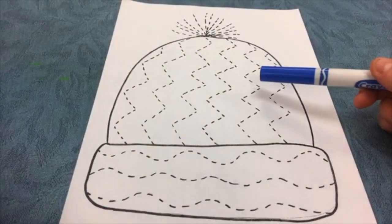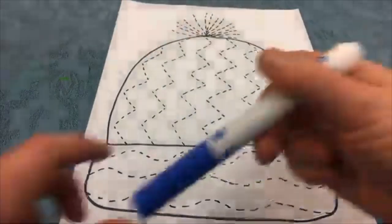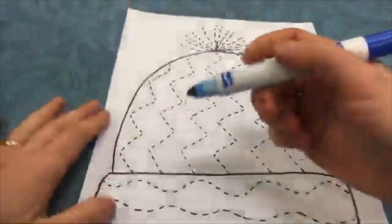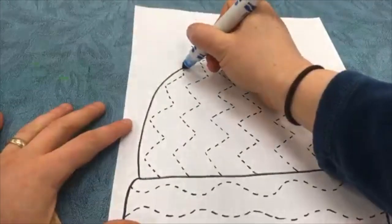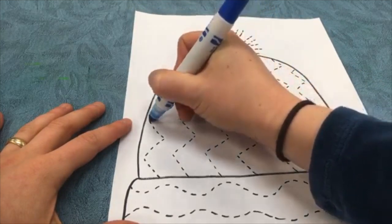Hello artists! Today we're going to be tracing over lines for this warm winter hat, and then we will add some color to it. So start off by taking the cap off your marker and put it on the back if you like. And then you're going to start at the top of the hat and you're going to follow those little dashed lines and connect them.